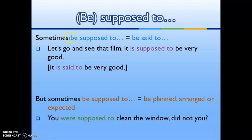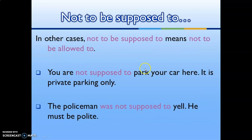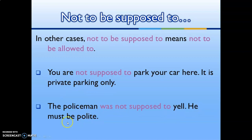'Be supposed to' can replace 'be said to.' For example: 'It is supposed to be very good' / 'It is said to be very good.' But 'supposed to' can also mean planned, arranged, or expected: 'You were supposed to clean the window, didn't you?' 'Not supposed to' can also mean not allowed to: 'You are not supposed to park your car here — it is private parking only.' 'The policeman was not supposed to yell; he must be polite.'